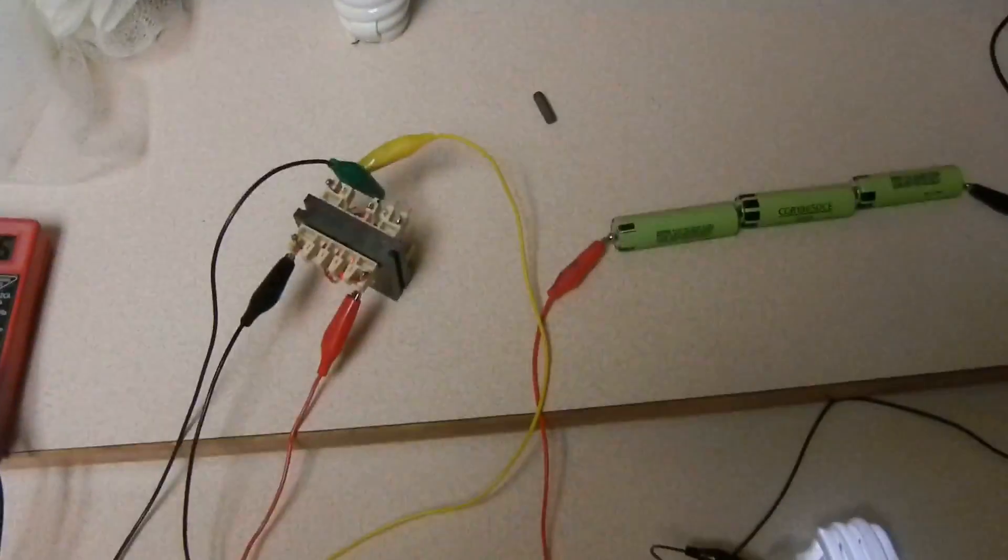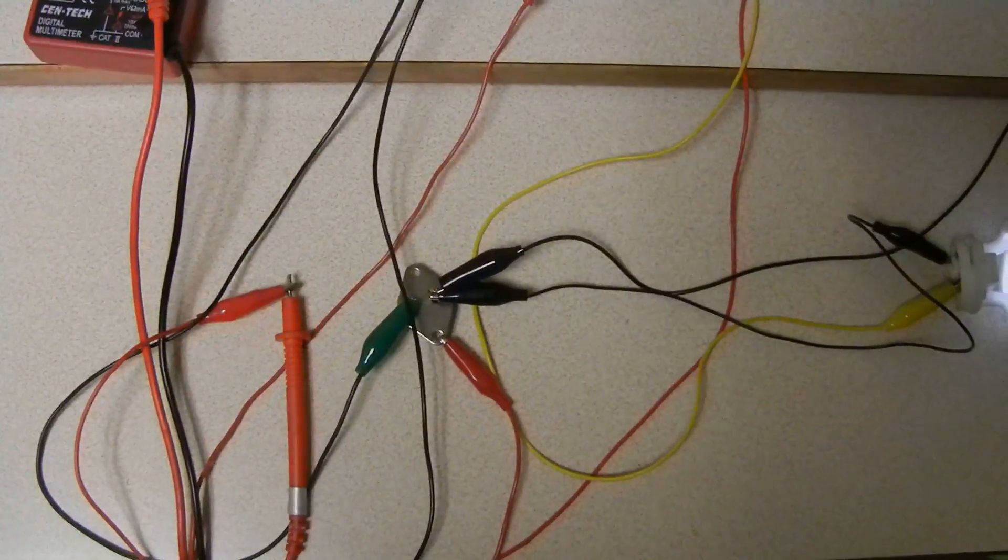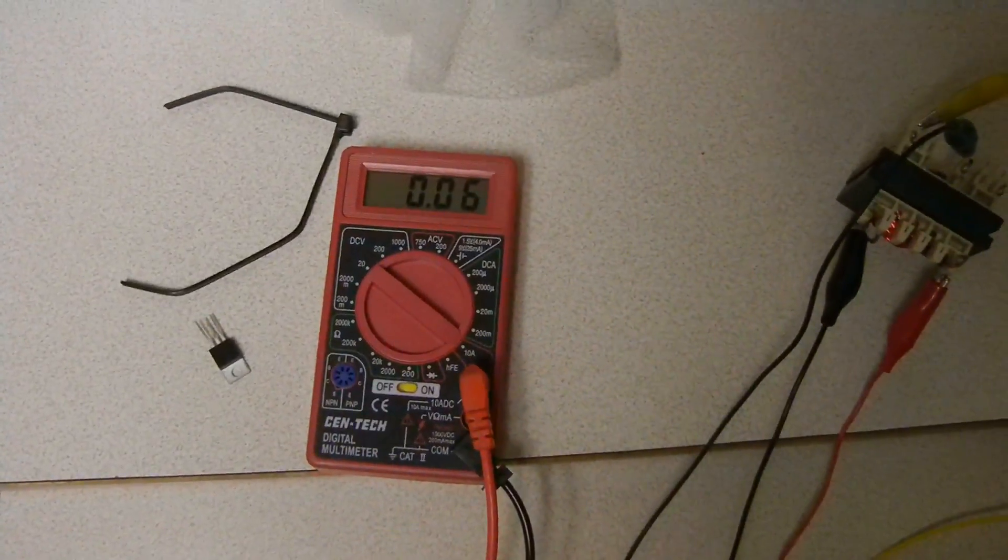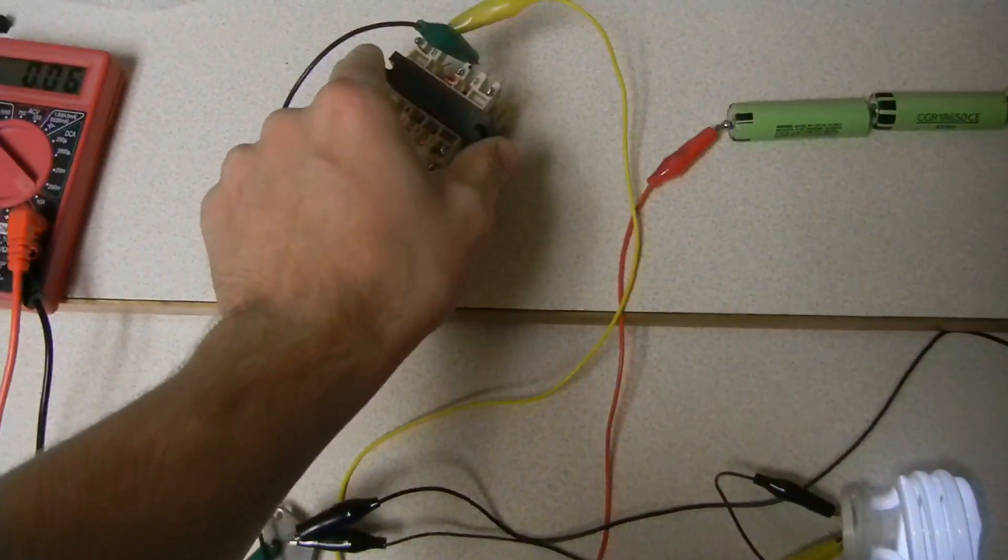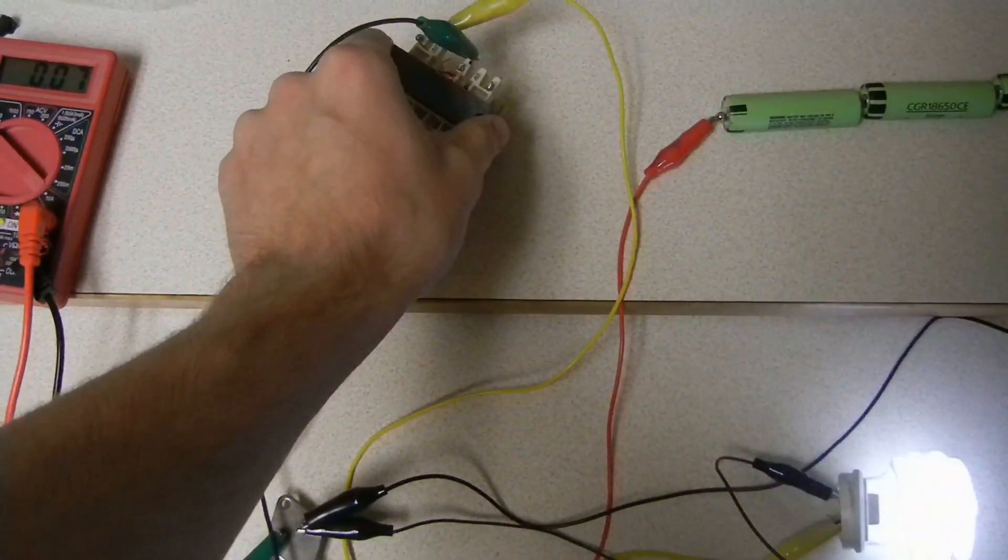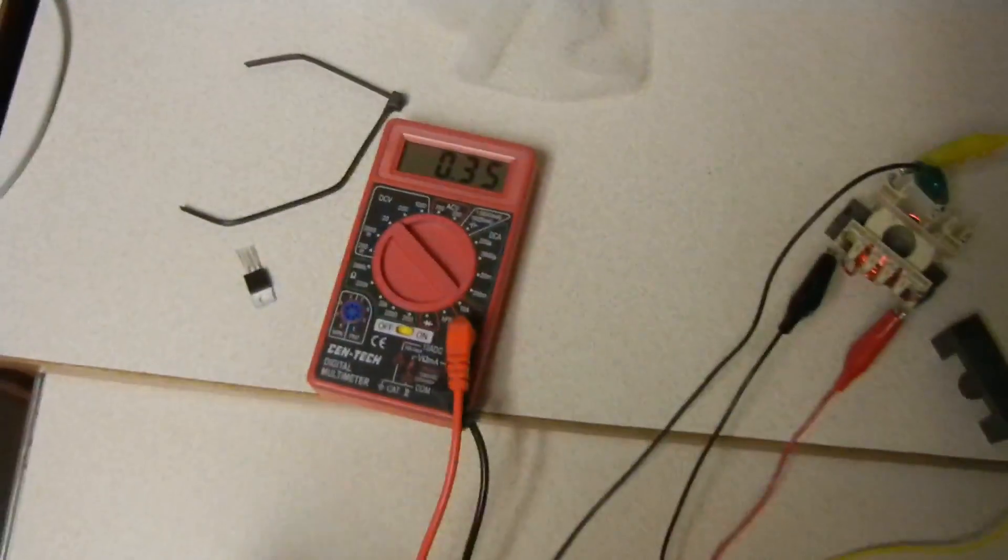Using a 2N3055 transistor, the milliamp draw is down to 60 milliamps. Like before, you can take off the ferrite and it'll get brighter, but the milliamp draw goes up to 350 milliamps.